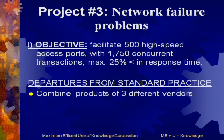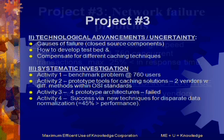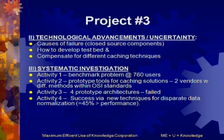The next project involves network failure problems combining products from three different vendors — so interoperability is an issue right away. The objective is to facilitate 500 high-speed access ports with 1,750 concurrent transactions, with a maximum performance loss of 25 percent over current response time. The uncertainties were: what were the causes of the failure (closed-source components made it hard to determine), how to develop an appropriate testbed, and how to compensate for different caching techniques. Any one of those could form a basis of eligibility — having three stacks the odds heavily in favor of an eligible project.